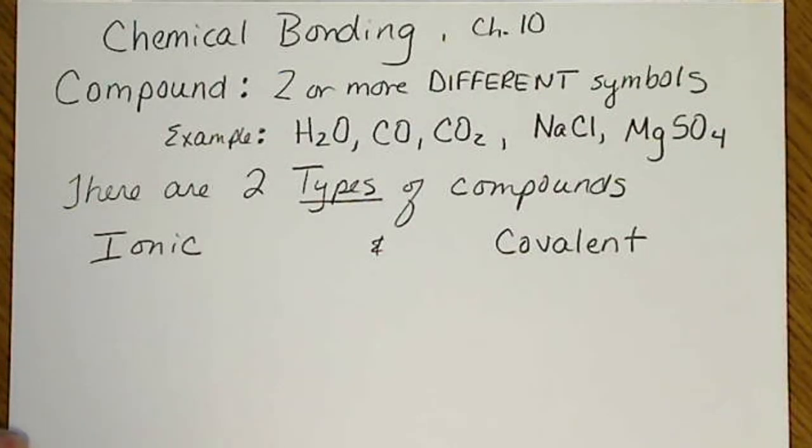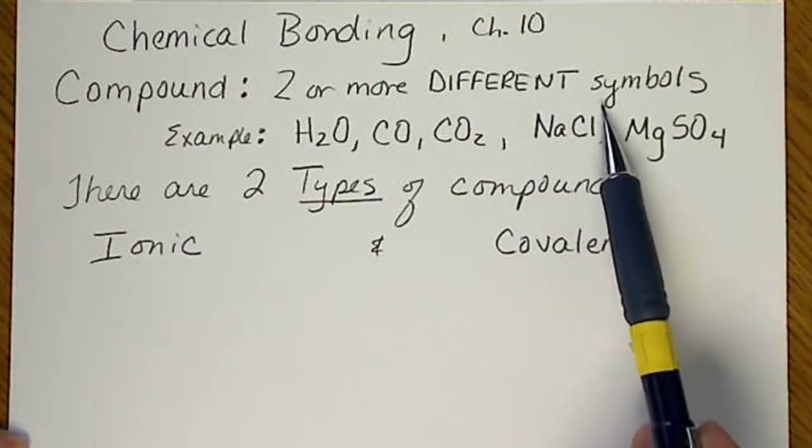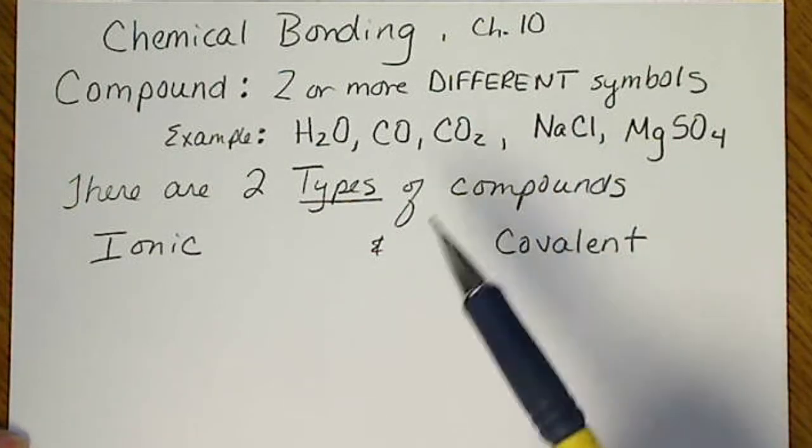Before we start talking about chemical bonding, which is in chapter 10, we're going to be reminded about different compounds. Remember that a compound is two or more different types of atoms, two or more different symbols.